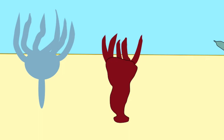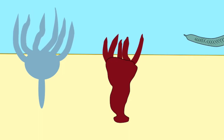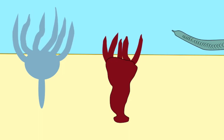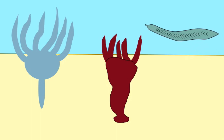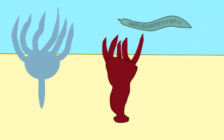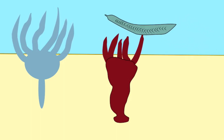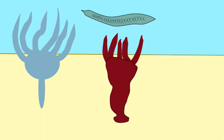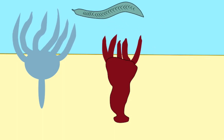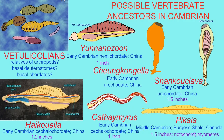Pikaia, from the Burgess Shale of Canada, is known from the middle Cambrian, which is slightly later than the first fish, so it would not have been ancestral. But nevertheless, from chordates such as this, it is thought that the earliest vertebrates evolved.